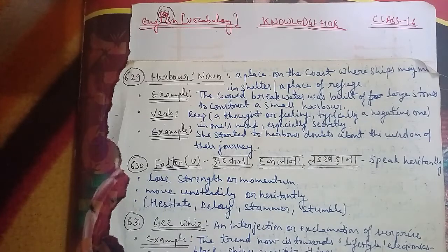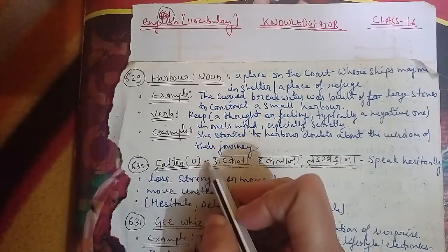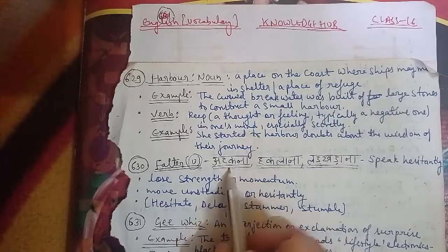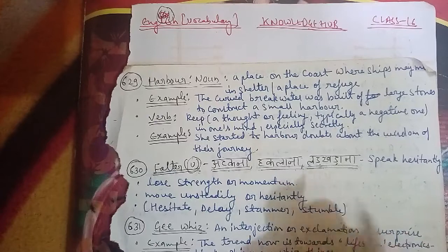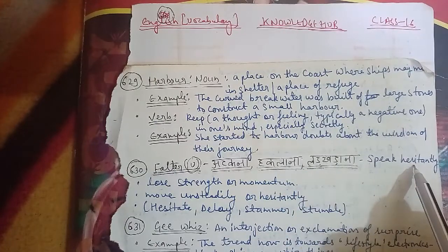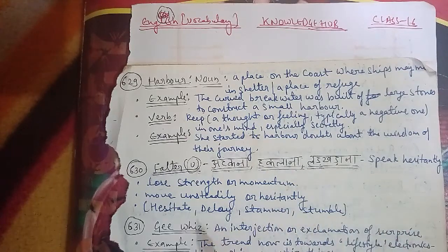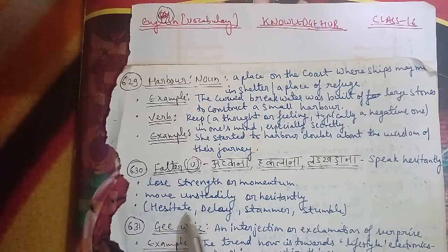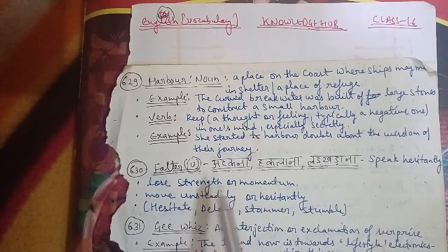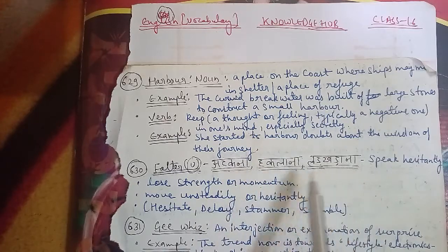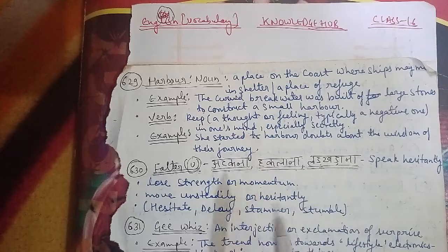The next is the 630th word: 'falter'. Falter means to speak hesitantly — when you are hesitating to say something, you falter. It means to lose strength or momentum, move unsteadily or hesitantly, hesitate, delay, stammer or stumble — 'attak ke bolna', 'hakla ke bolna'. For example: Raju falters while speaking. You can make a sentence for anybody using the word 'falter'.